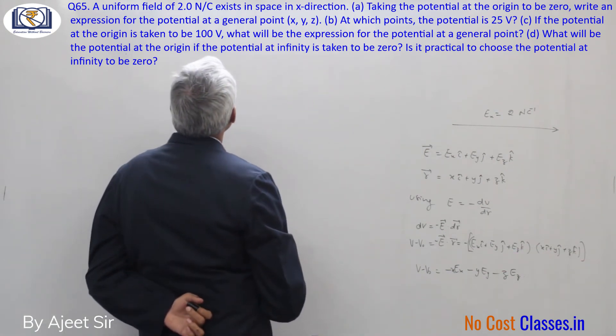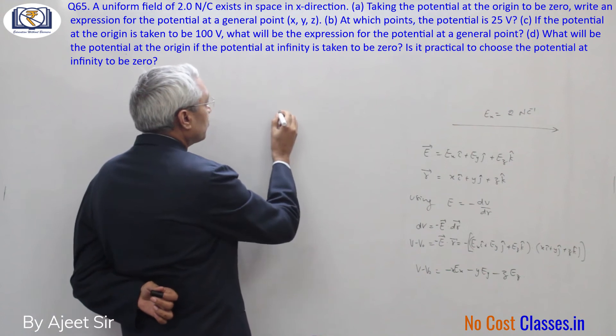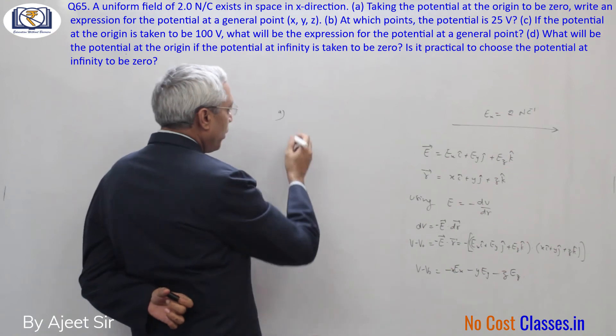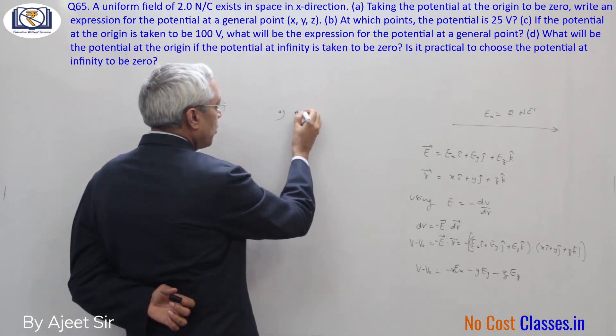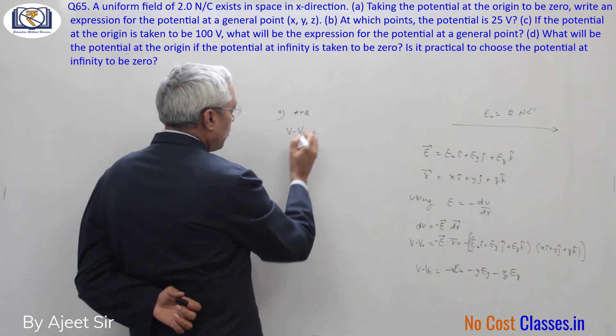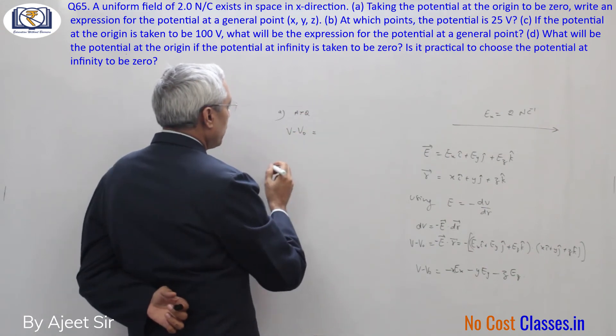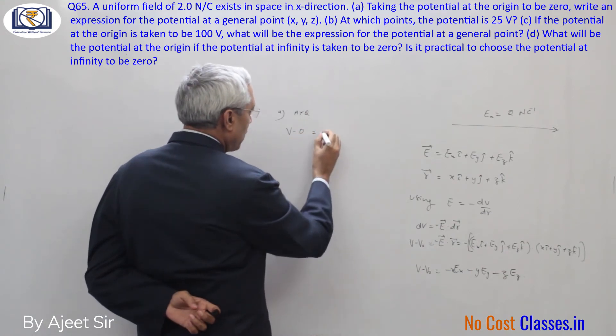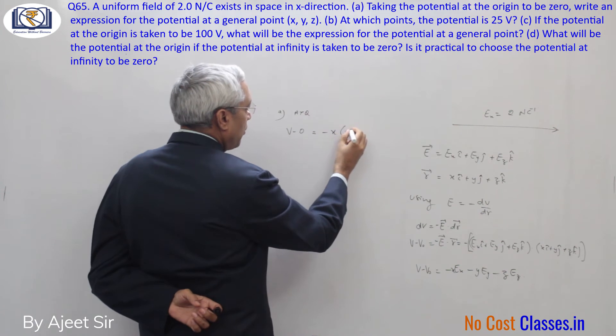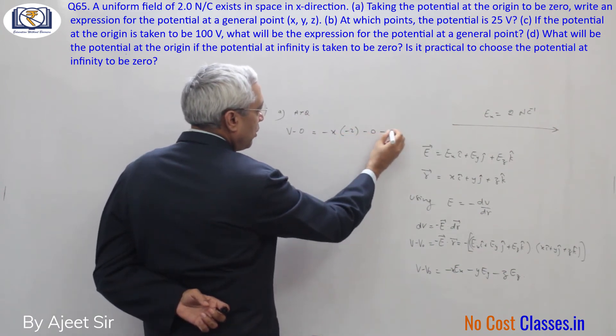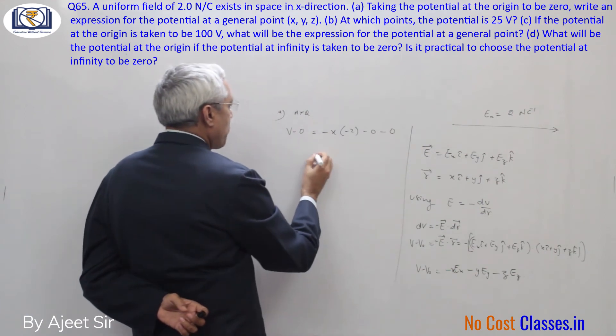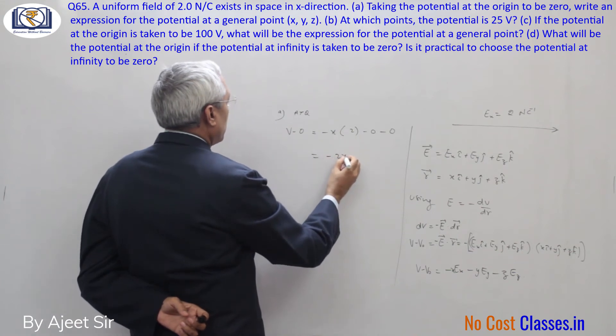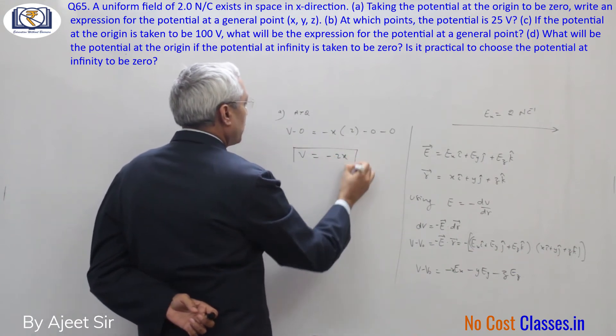As you see in the first part, here Ex value is 2. So V minus V naught, taking origin value as 0 as told in the first part, V minus 0 equals minus 2x. The y and z components are not given, so V equals minus 2x. This is your first general expression.